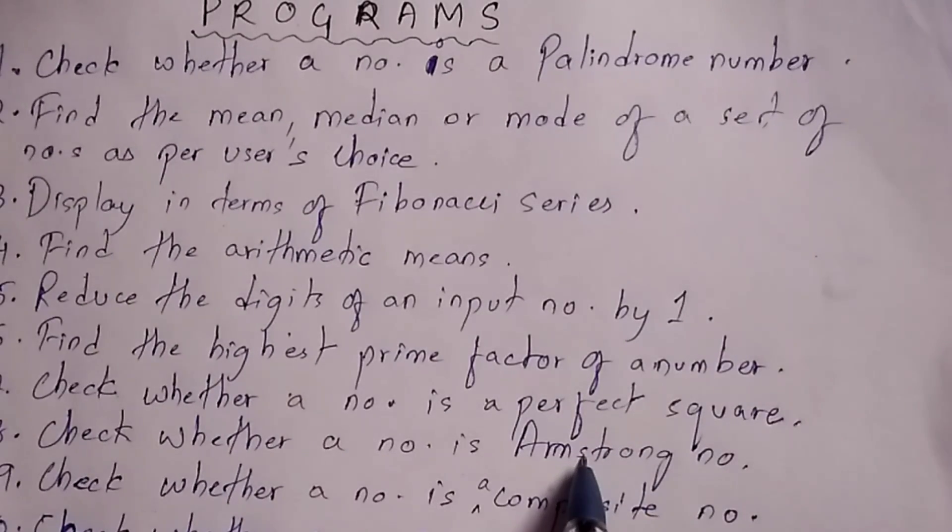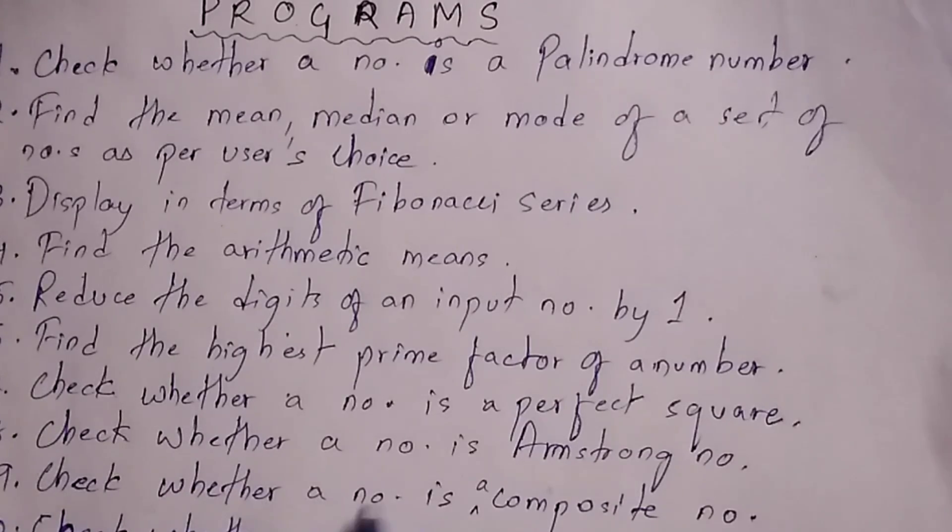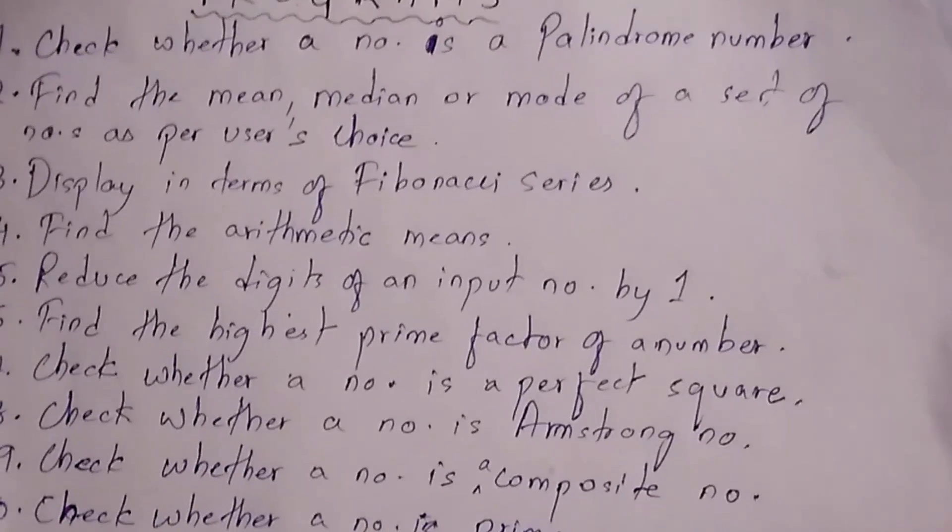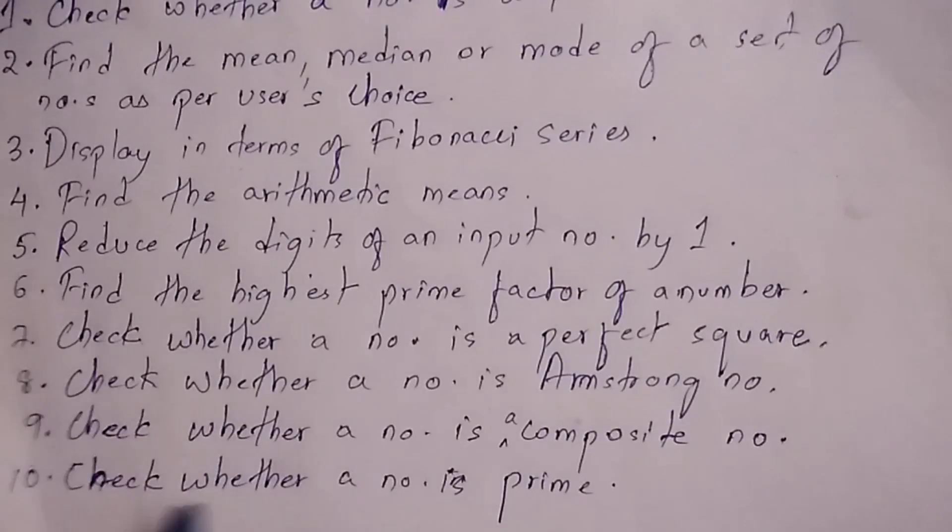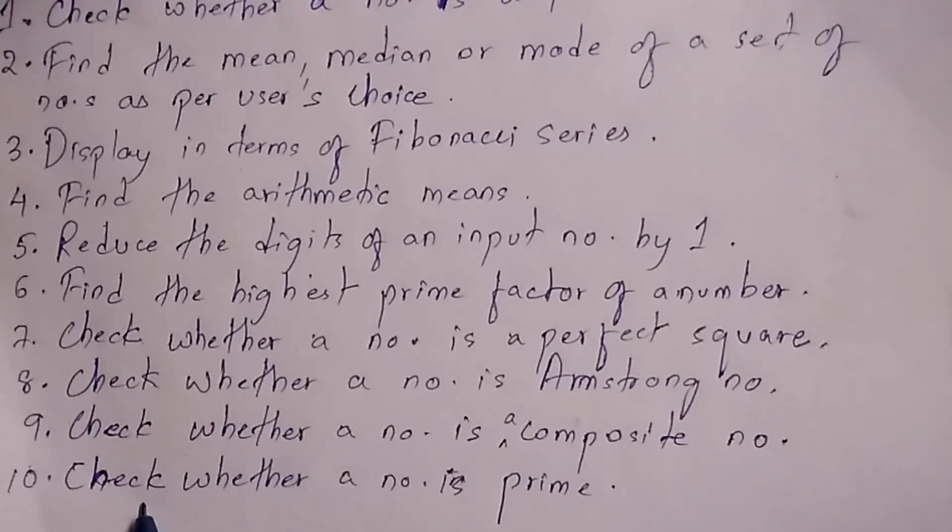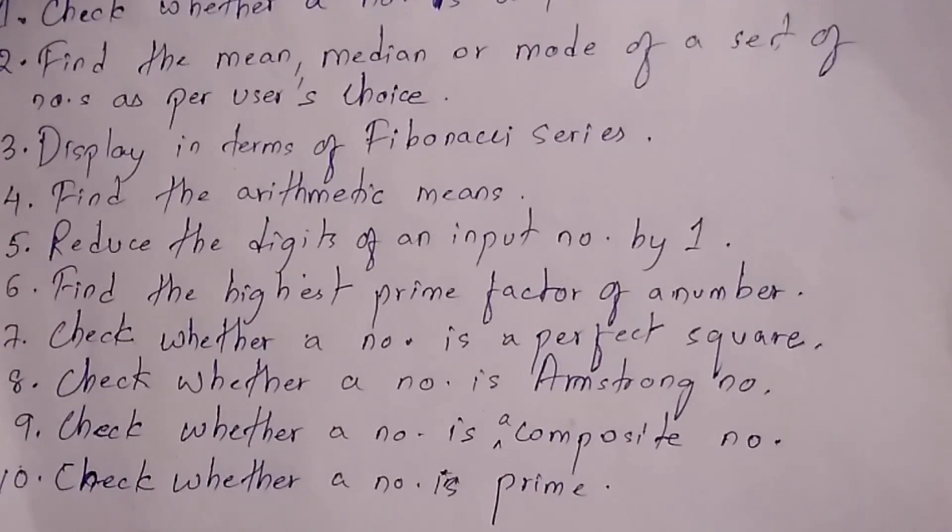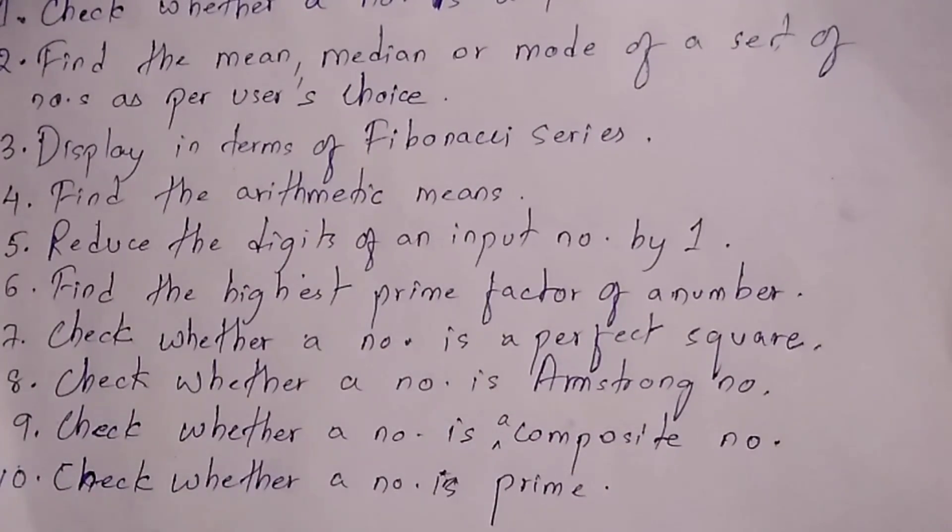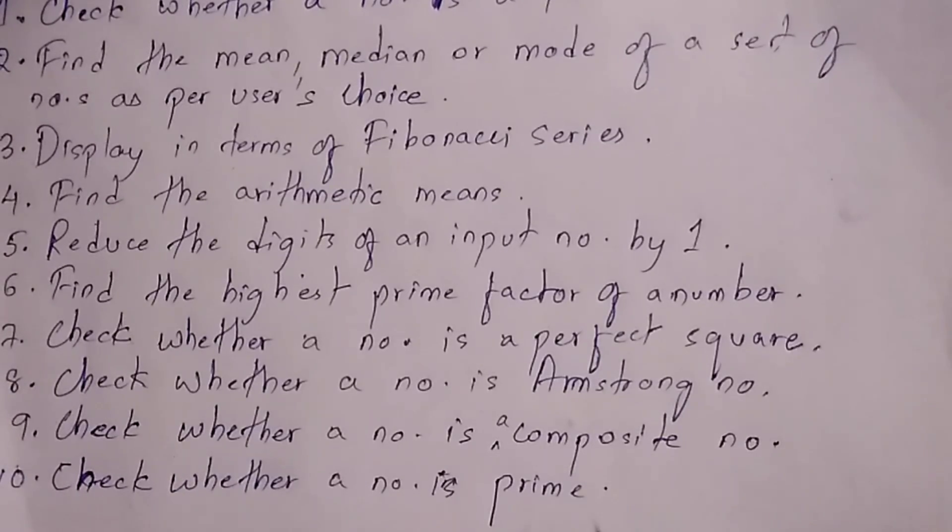After that, check whether a number is a perfect square number, and then comes your Armstrong number. This is also important, it is most of the time repeated in your board exams. After that, check whether a number is a composite number. This is important. And the last one, check whether a number is a prime number. This is also important, you must go through this.